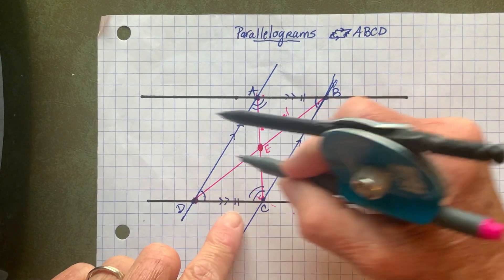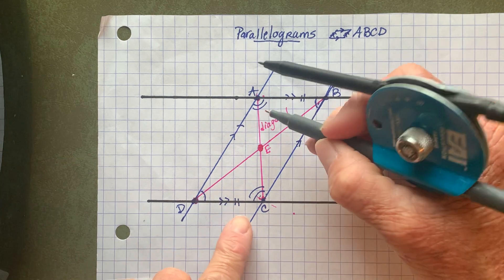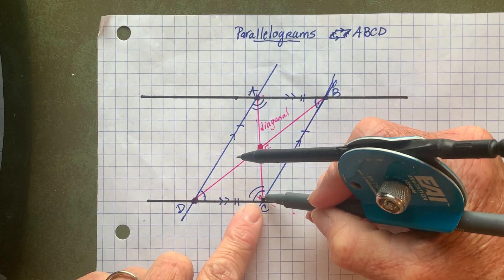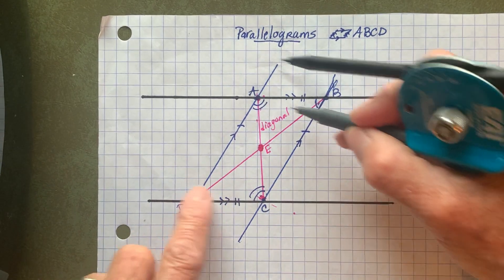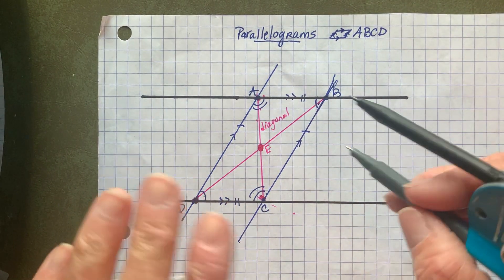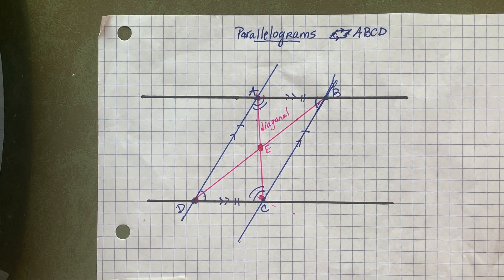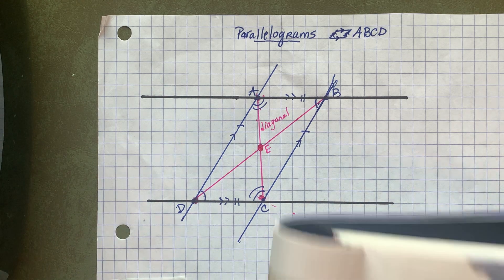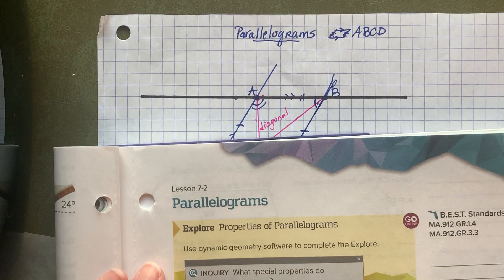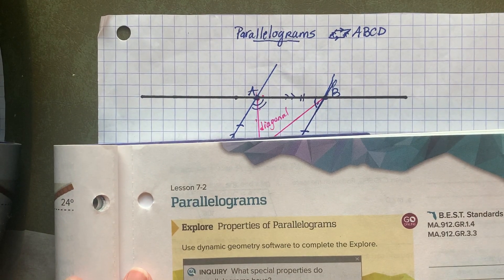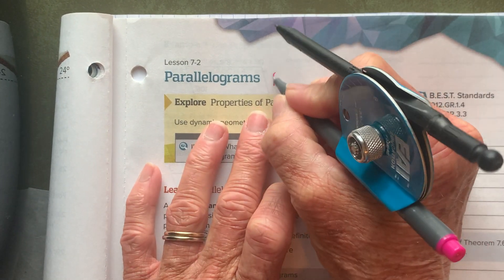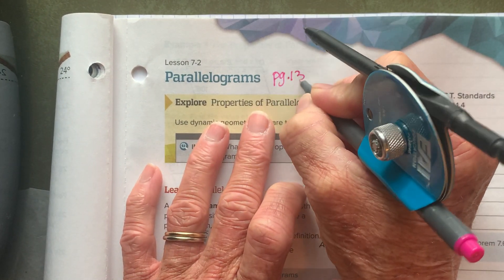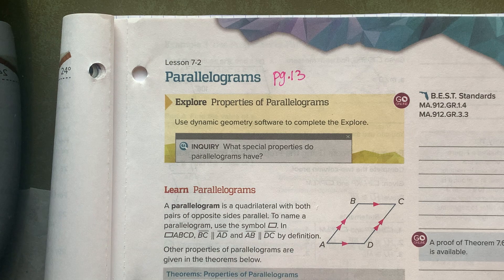Opposite sides are congruent. Opposite angles are congruent. Consecutive angles are supplementary. And the diagonals cut one another in half. So let's go to our books now. You'll see that all of those theorems are listed here — I just wanted you to see that they were true. We're on page 13 now in our new book.